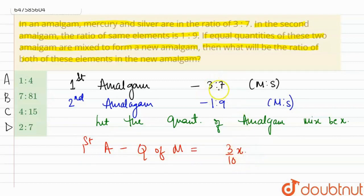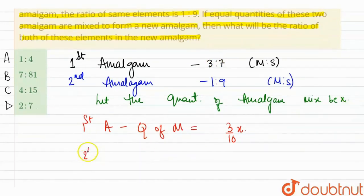So first we got 3/10. Similarly, second amalgam has quantity of mercury as 1/10x.